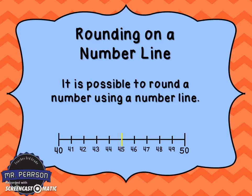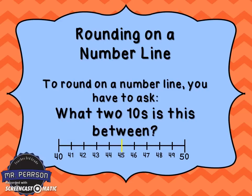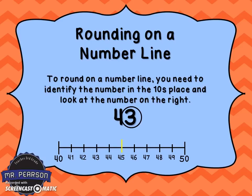Let's talk about rounding on a number line. It is possible to round a number on a number line. In order to do this, you have to ask this very important question: what two tens is this number between? To round on a number line, you need to identify the number in the tens place and look at the number on the right.